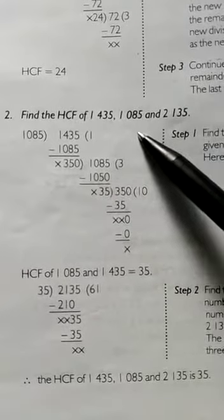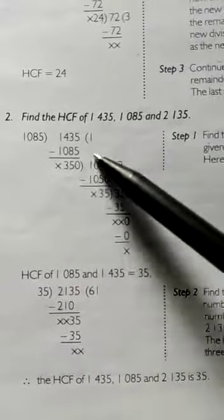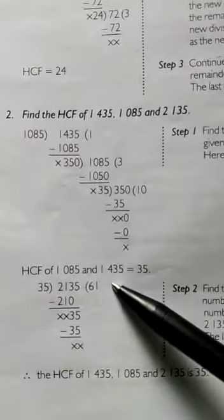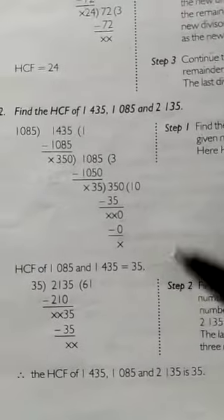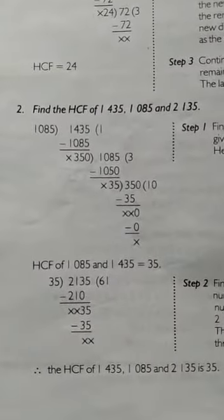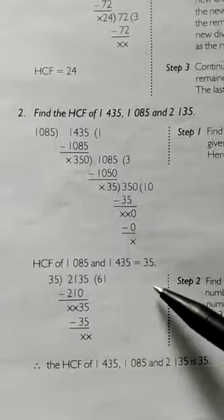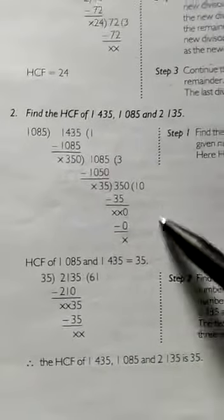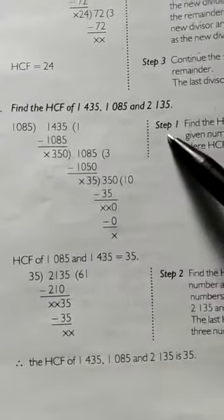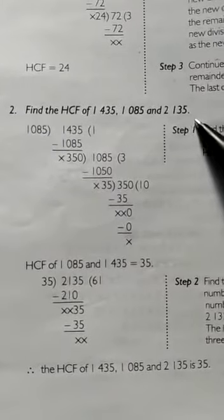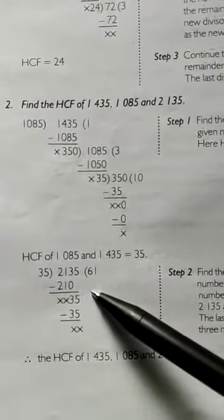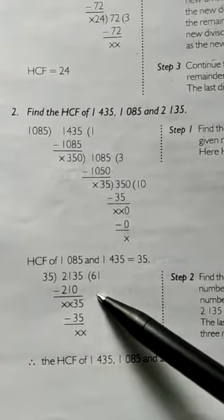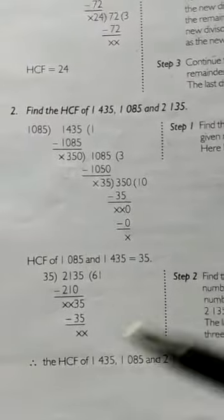We find the HCF of 1085 and 1435, which gives us 35. In Step 2, find the HCF of this result and the third number. We divide 2135 by 35 — it divides 61 times with no remainder — so the HCF of all three numbers is 35.